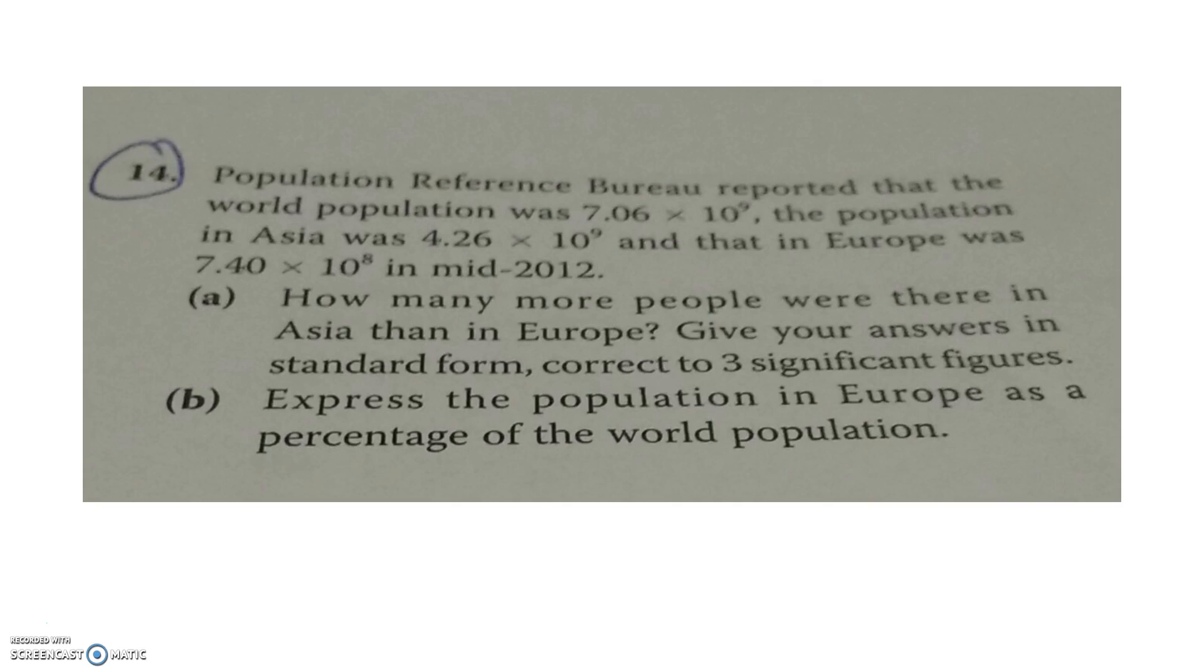Very quickly let's go for question A. We are looking at how many more people were there in Asia than Europe. In Asia there was 4.26 times 10 to the power of 9. In Europe there was 7.40 times 10 to the power of 8.